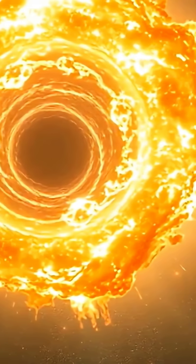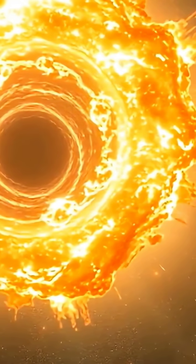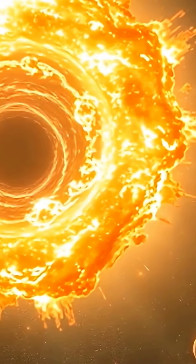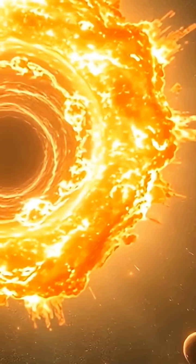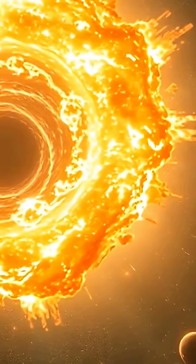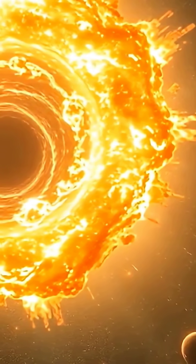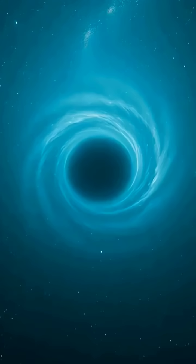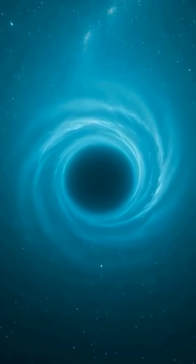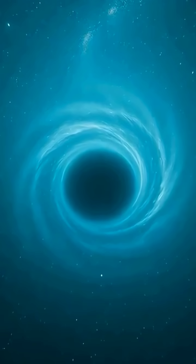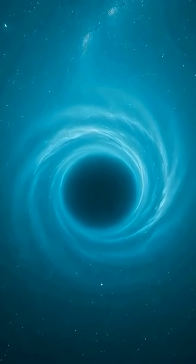Rogue black holes typically form when massive stars explode in brilliant supernovae, or when gravitational interactions send them careening away from their home galaxies. Unlike most black holes that latch onto stars, these cosmic nomads float freely through interstellar or even intergalactic space.